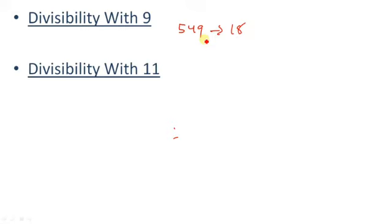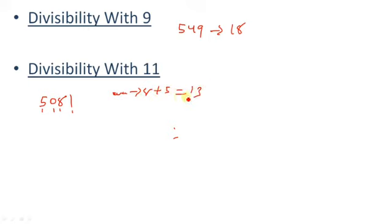Now let us look at divisibility by 11. Take the number 5081. We look at even place and odd place digits. The sum of even place digits (positions 2 and 4) is 8 + 5 = 13. The sum of odd place digits (positions 1 and 3) is 1 + 0 = 1. We subtract: 13 − 1 = 12. Since 12 is not divisible by 11, so 5081 is not divisible by 11.